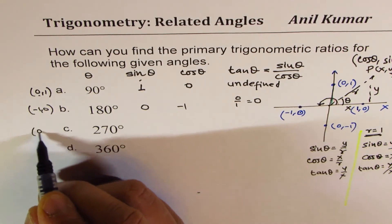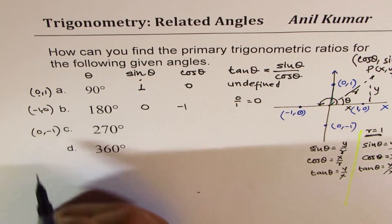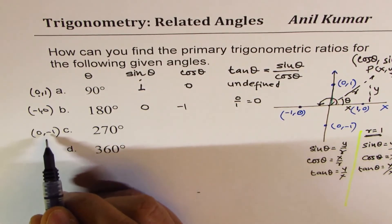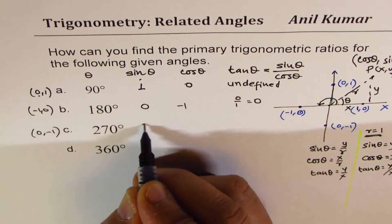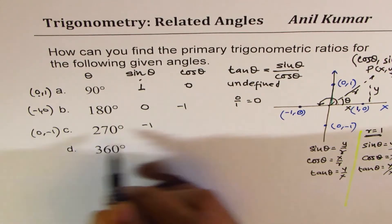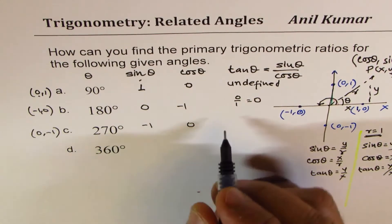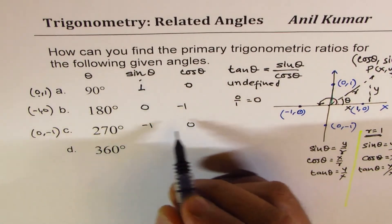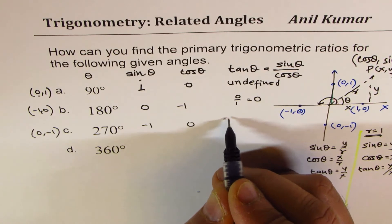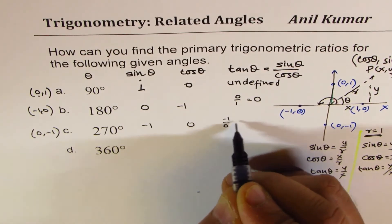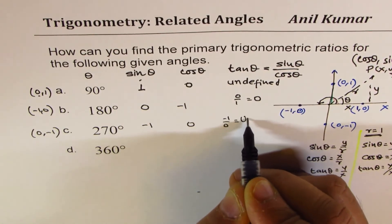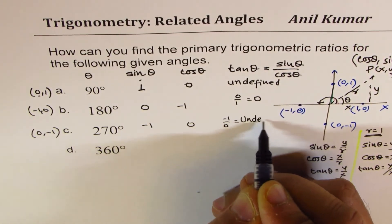On 270 degrees, the point is (0, -1). Here sine theta is -1, cos theta is 0, and the ratio is sine over cos which is -1 over 0, which is undefined — just as we had for 90 degrees.